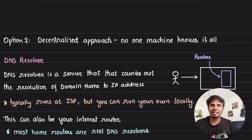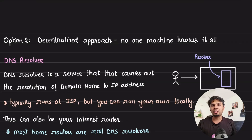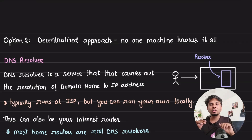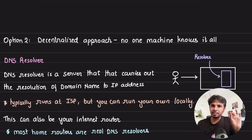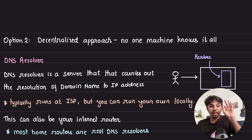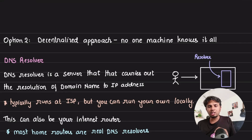A centralized system would not work given the sheer amount of requests and data it would need to handle. That's why the world has gone with decentralization — where one machine does not know it all. This is where a critical component comes in called the DNS resolver. The DNS resolver is the one that performs the entire DNS resolution process.